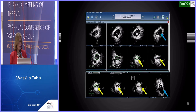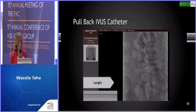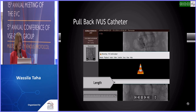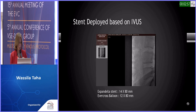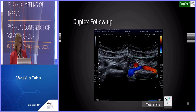To deploy a stent in the iliac vein, we must go from healthy segment to healthy segment. By pullback of the graduated catheter, we can measure the length of stent needed and select it based on IVUS measurements. The native diameter is also measured from the healthy segment by IVUS. This is after deployment of the stent and completion venography showing free flow up to the IVC. Duplex follow-up by B-mode shows the stent well deployed with the right common iliac artery visible, and color flow confirms a fully patent stent.